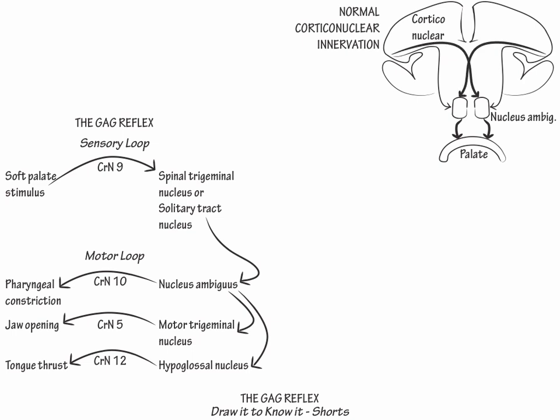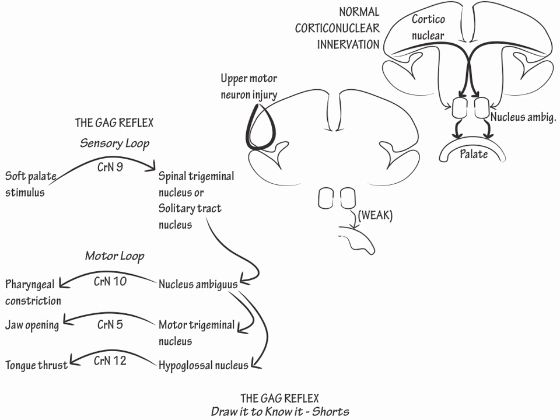To solidify our understanding of this pathway, let's see what happens when it is injured. Redraw the hemispheres and the bilateral nucleus ambiguous nuclei. Show that in an upper motor neuron lesion, such as a stroke, the side of the palate contralateral to the stroke is weak, and the side contralateral to the intact hemisphere is strong, because the majority of fibers from the intact cortex go to the contralateral nucleus ambiguous.